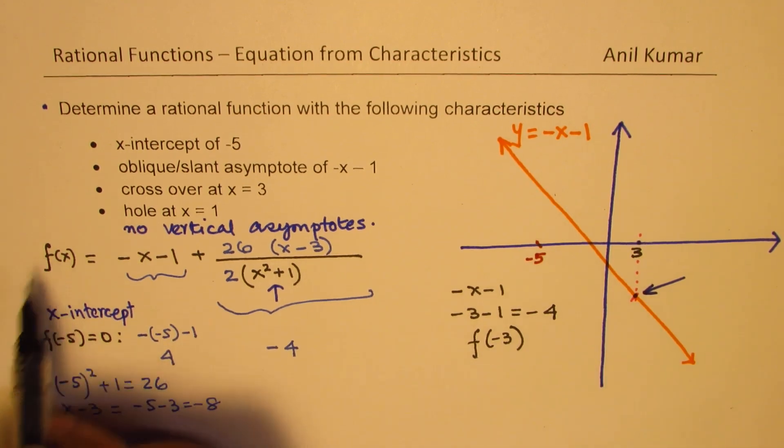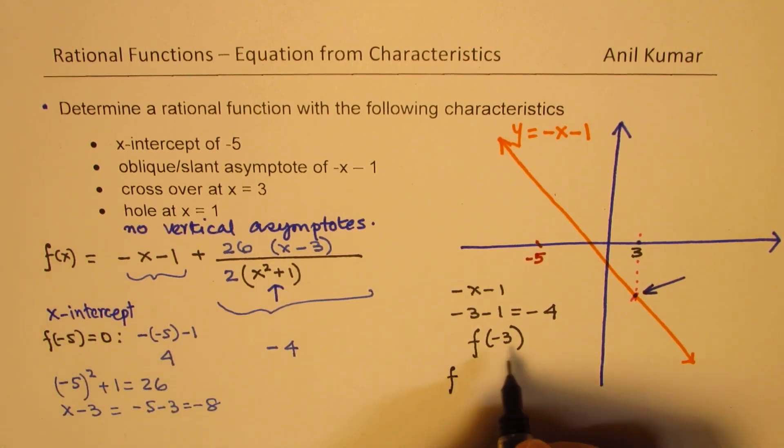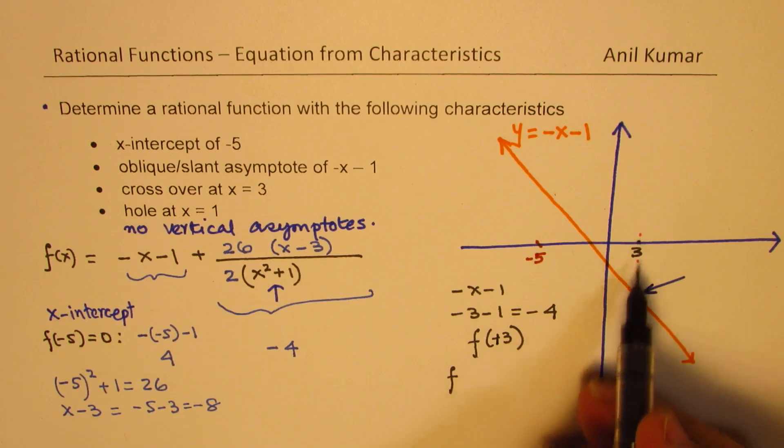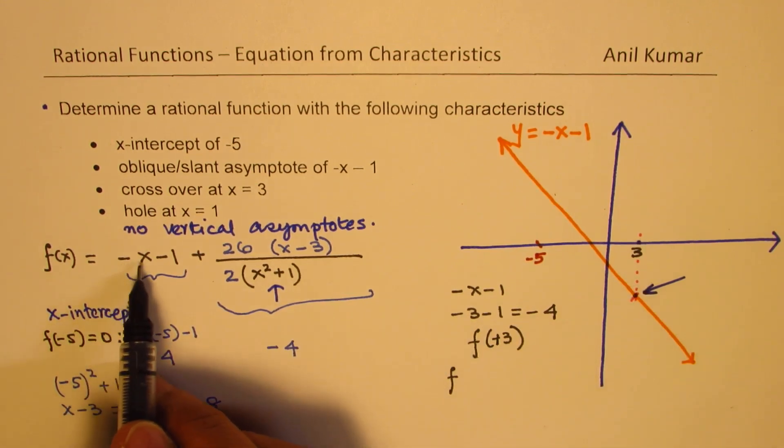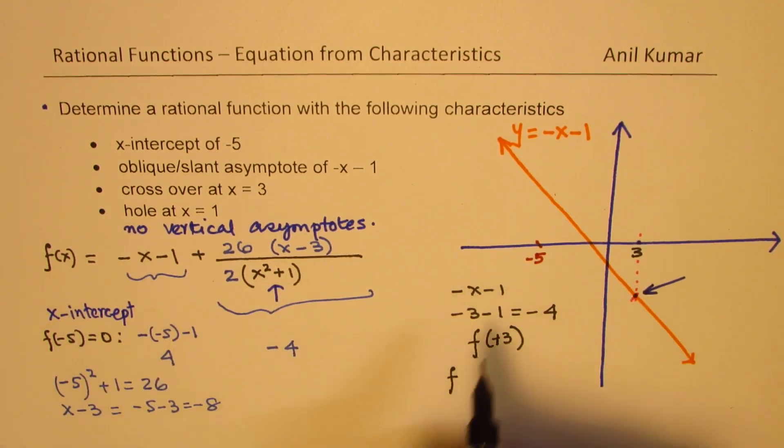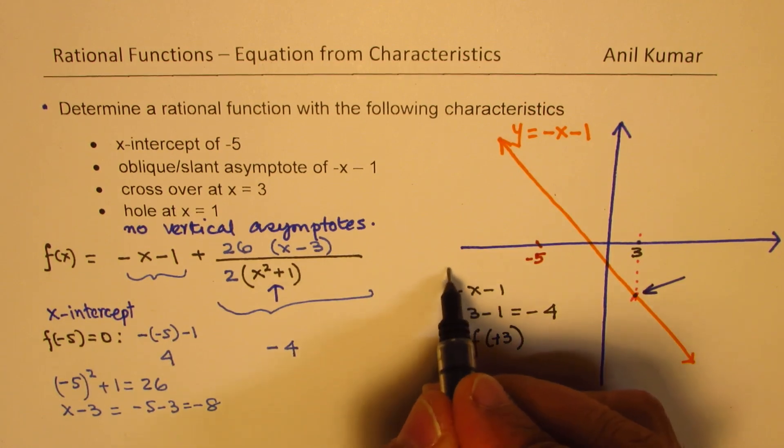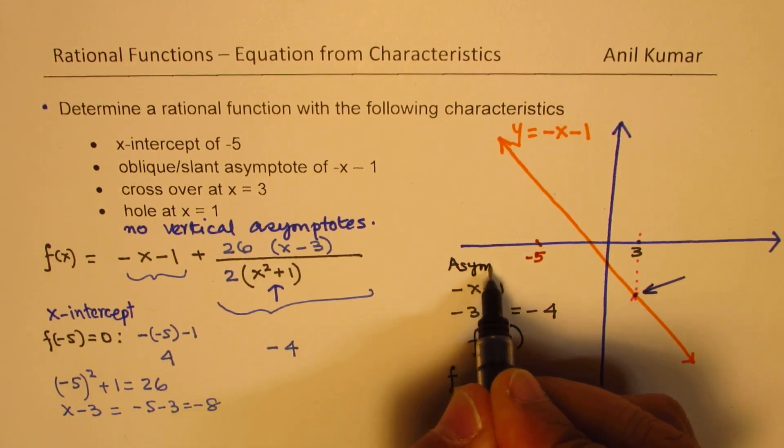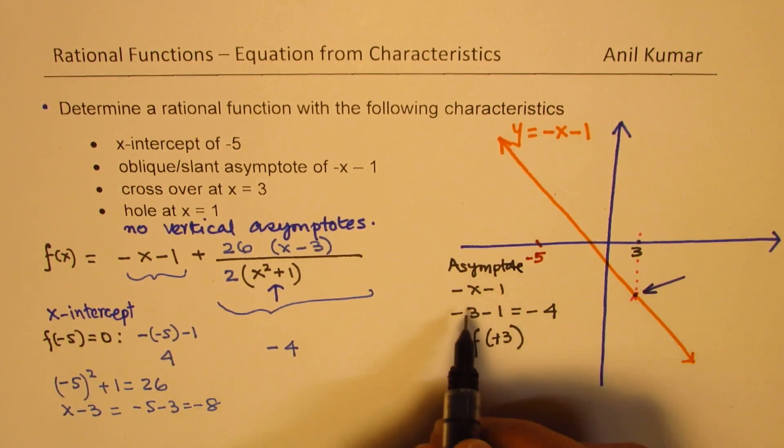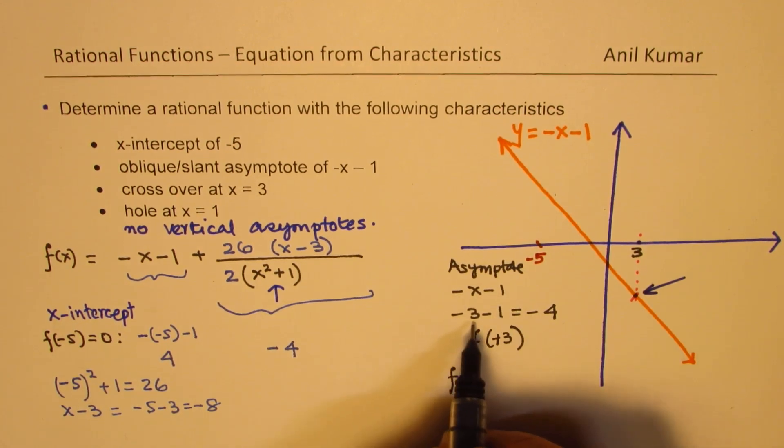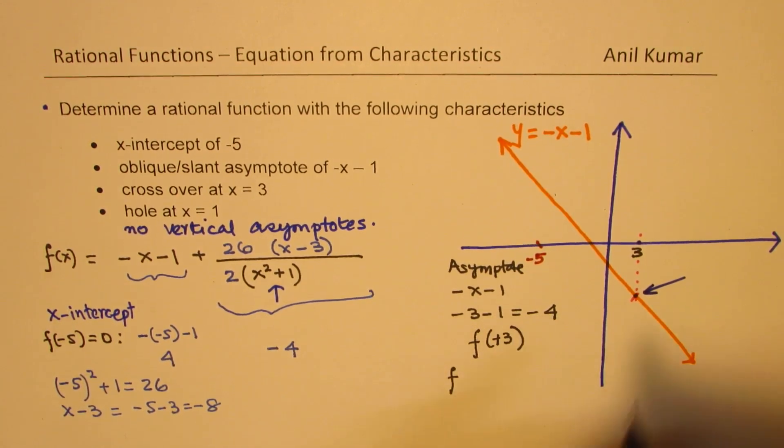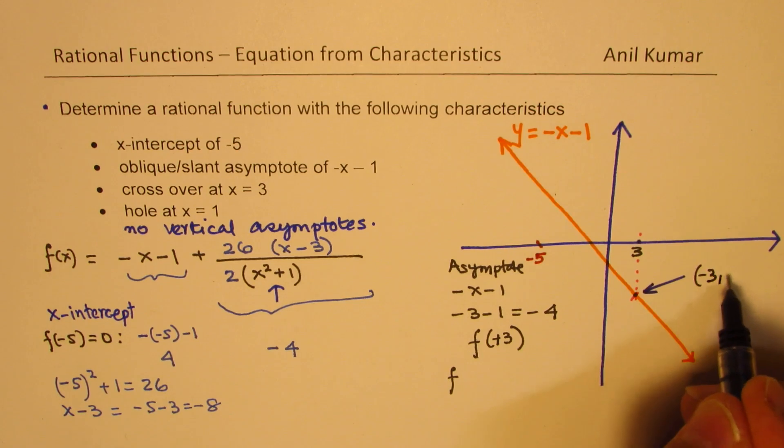So if I substitute 3 here, this is at 3. This is minus because of minus x minus 1. So this was asymptote, which is minus x minus 1. So when I substitute 3, I get minus 4. So this point here is 3, minus 4.